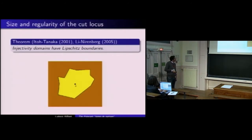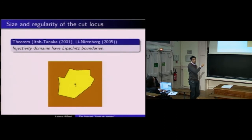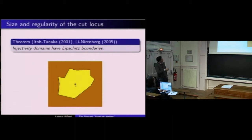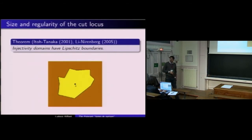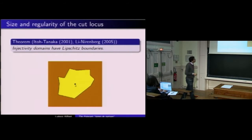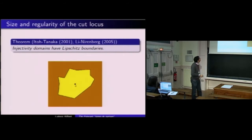Ito-Tanaka et Lee-Nirenberg ont montré indépendamment (à quatre années d'écart, sans connaissance mutuelle de leurs travaux) que les domaines d'injectivité sont toujours à bord Lipschitz — ce qui signifie que les cut locus, visualisés dans les espaces tangents, sont toujours des courbes Lipschitz. C'est un théorème difficile à obtenir. La question qu'on peut se poser est : peut-on dire mieux ? Par exemple dans le cas du tore, le domaine est un carré qui est plus que Lipschitz — il est convexe.